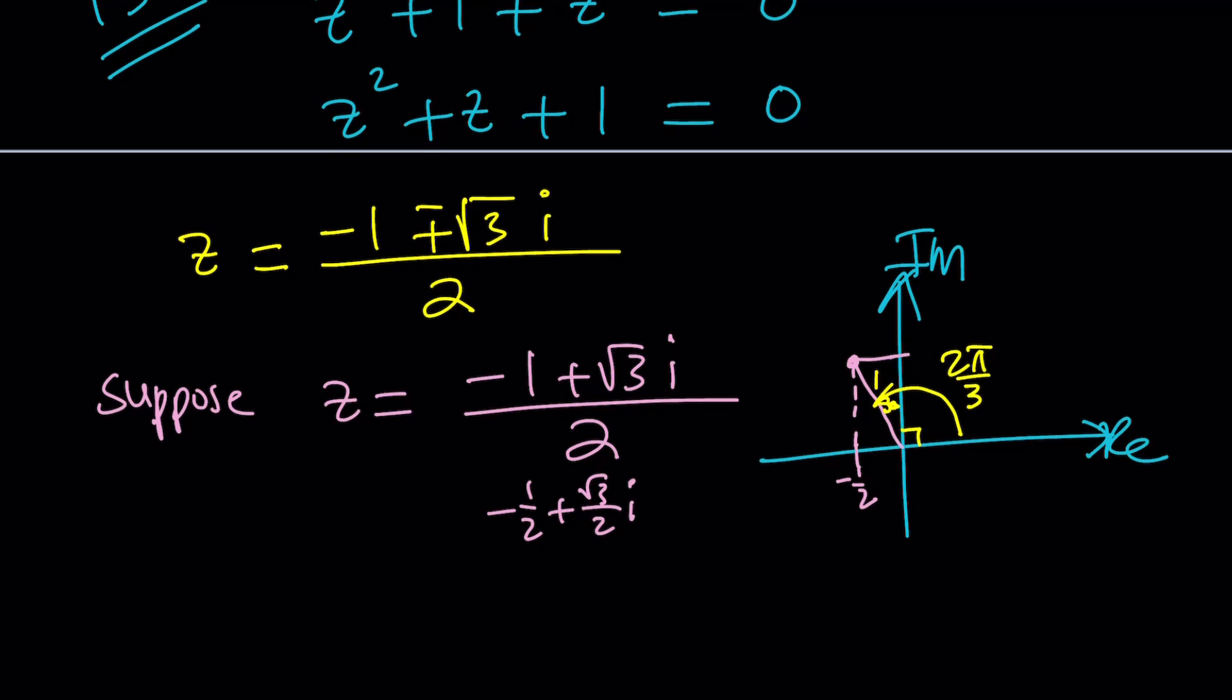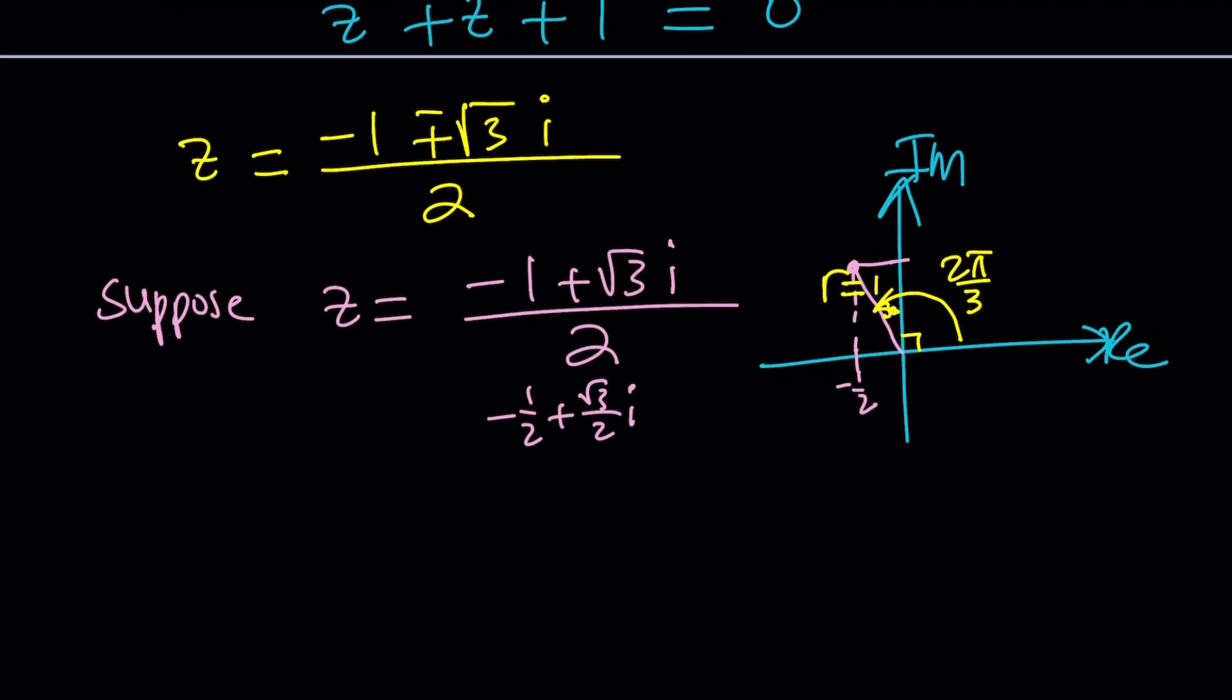And r would be hypotenuse. And r in this case is actually 1 because this is a 30-60-90 triangle with the shorter leg being 1 half. So let's go ahead and write this in polar form using the form r e to the i theta. Since r is 1, we don't need to worry about it. So our number z is actually going to be written as e to the power 2 pi i over 3. So our angle is 2 pi over 3. But remember, we're supposed to multiply the theta by i in the exponent.